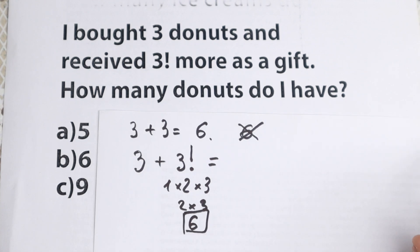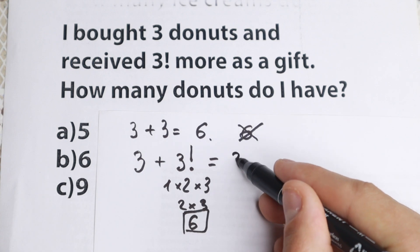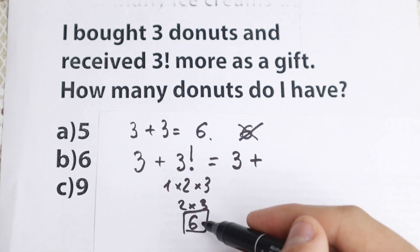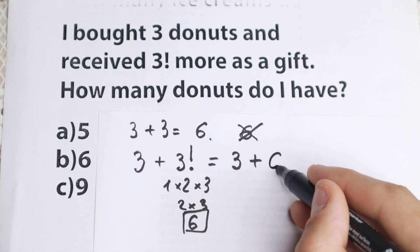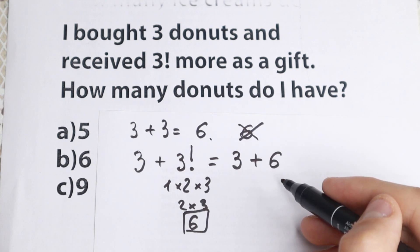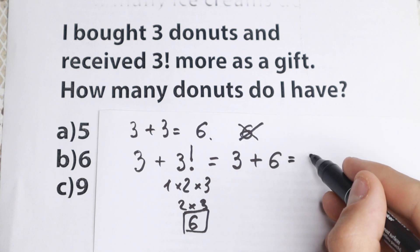This is really great. Okay let's go next. 3 factorial equals 6. So as a result 3 donuts and I received not 3 with this sign, I received 6 more as a gift. So as a result I received 6. This is really great when you buy 3 donuts and you receive 6 more. So 3 plus 6 equal to 9.